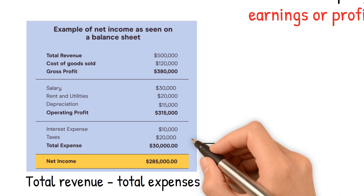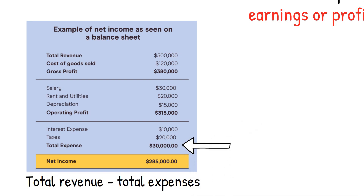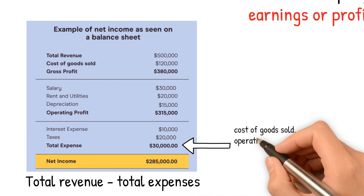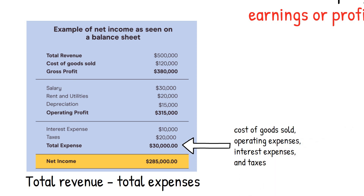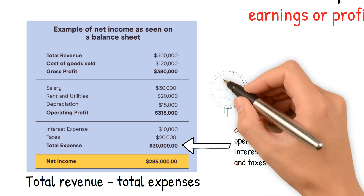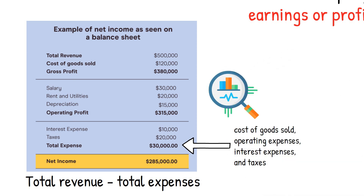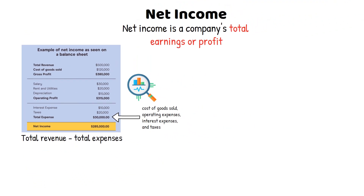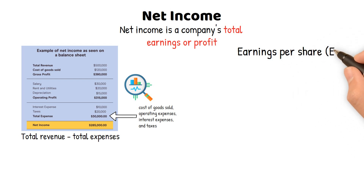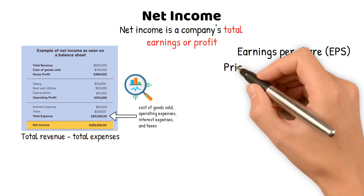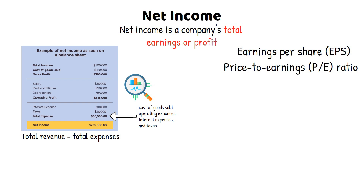Expenses subtracted from revenue to arrive at net income include the cost of goods sold, operating expenses, interest expenses, and taxes. Net income is an essential metric for investors, providing insight into a company's profitability and ability to generate positive shareholder returns. It is also used to calculate important financial ratios, such as earnings per share (EPS) and price-to-earnings (PE) ratio, commonly used to evaluate a company's stock price and investment potential.